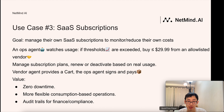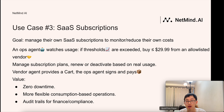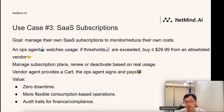The third use case is SaaS subscriptions. The goal is to manage and reduce SaaS subscription costs. An Ops agent watches usage and, if thresholds are exceeded, buys plans from an allowed-list vendor. The Ops agent can also manage subscription plans — renewing or deactivating them based on real usage — saving you the time to manage it yourself, especially when you have 20 or 100 subscriptions. Benefits include zero downtime, flexible consumption-based operations, and audit trails for finance and compliance.